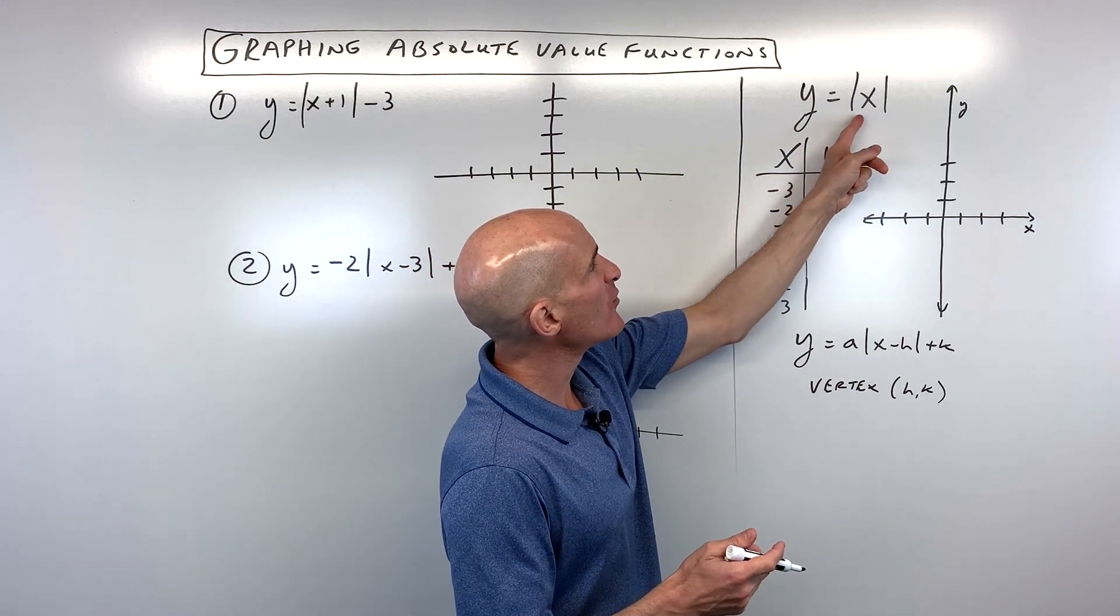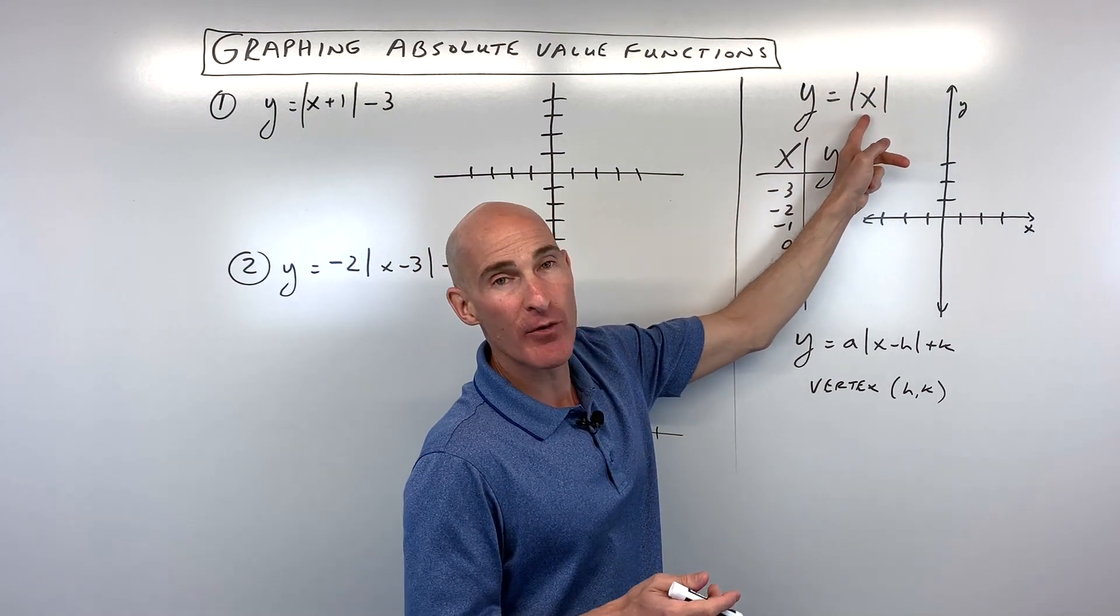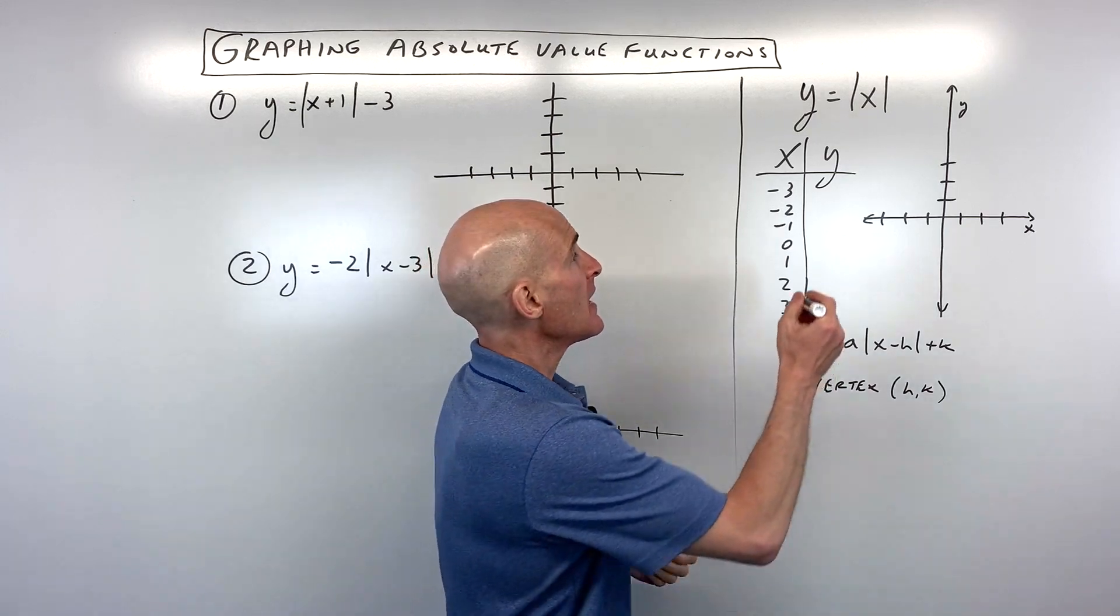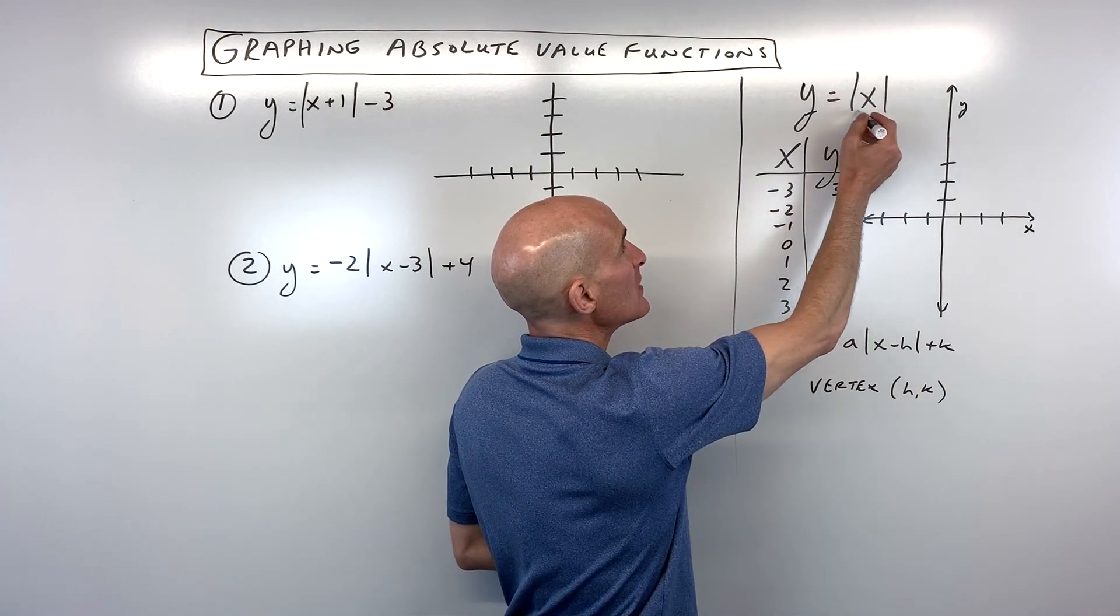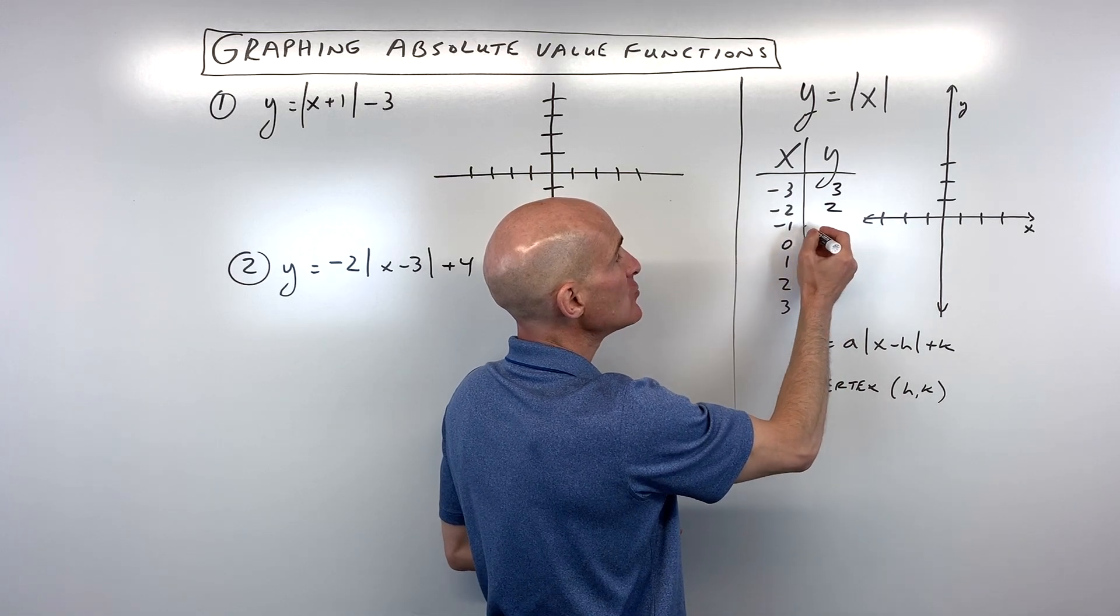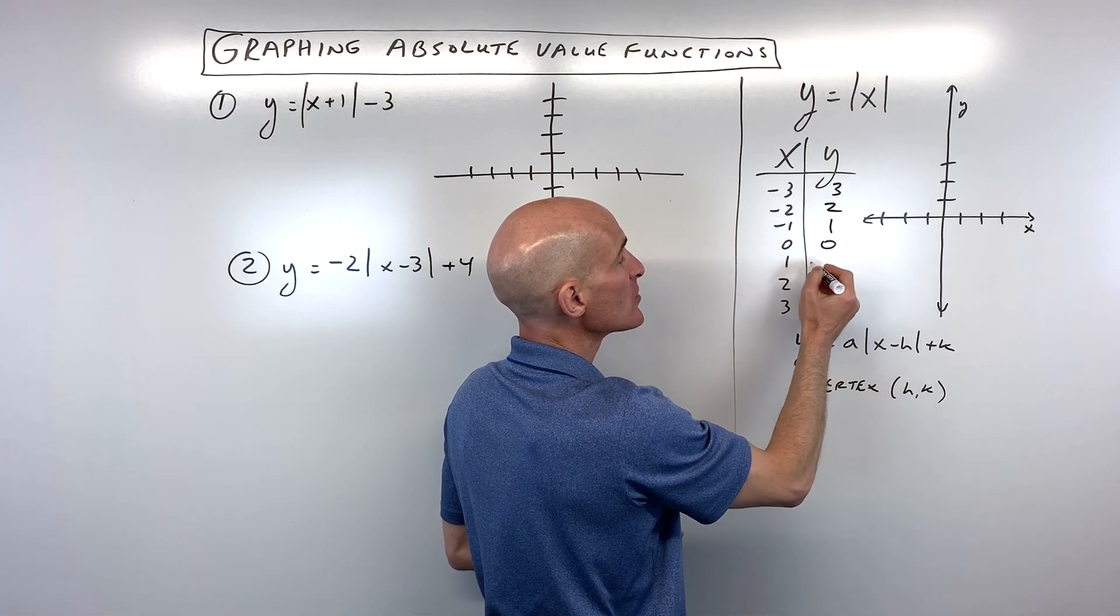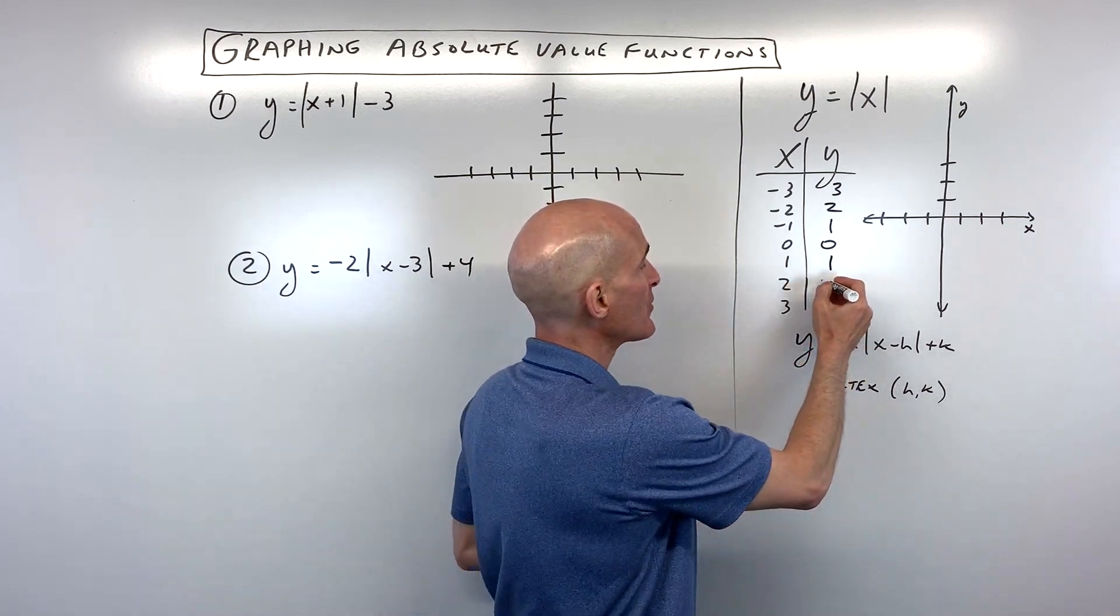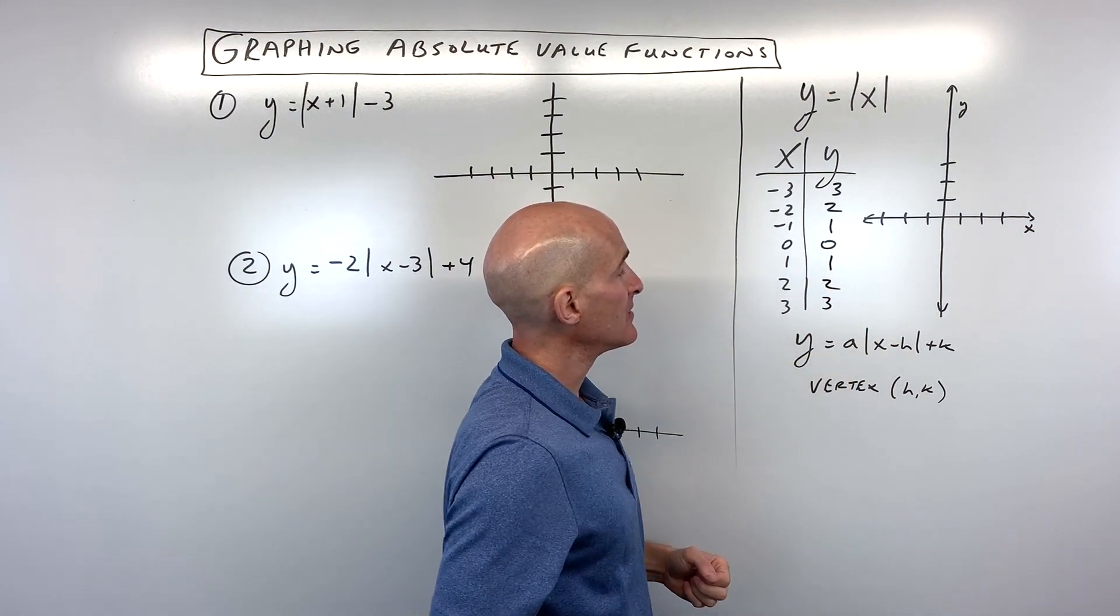So negative three, when we put it in between these absolute value bars, that tells us to make the quantity positive. It's like the distance from zero. And so this is going to be three. If we put negative two in it, we get the absolute value that gives us positive two. Negative one is one. Zero is zero. One is one. It's always going to be positive. Remember, it's that distance from zero and so on.